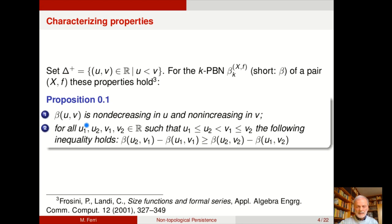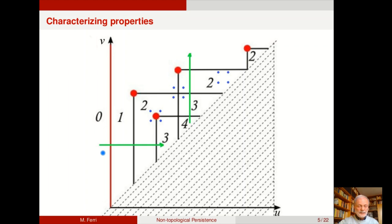It's possible to prove that it just comes from two particular properties of persistent Betti number functions. Instead of reading them, I'll show them on this picture. The first property is that persistent Betti number functions are non-decreasing in horizontal, non-increasing in vertical.